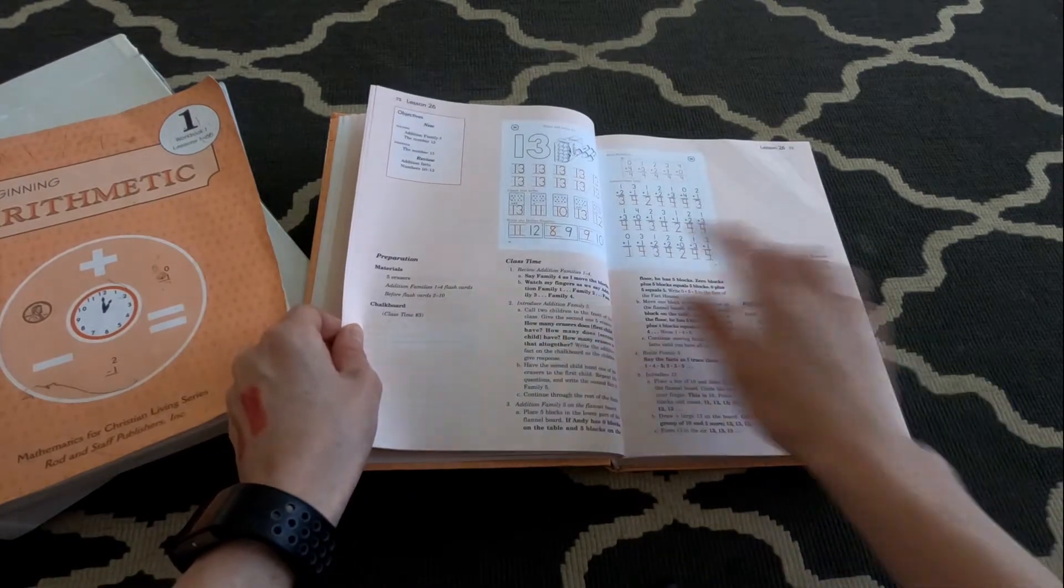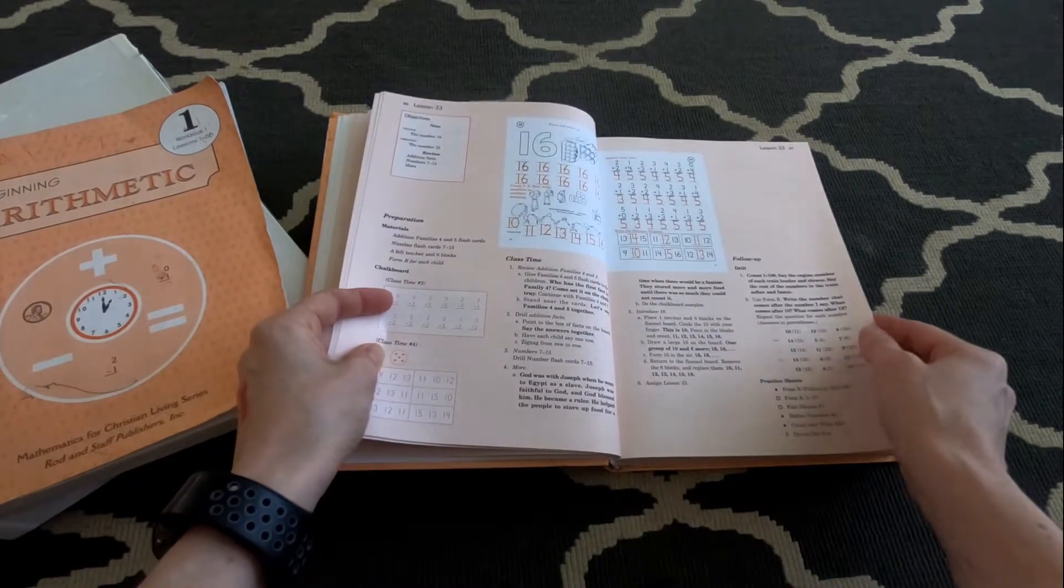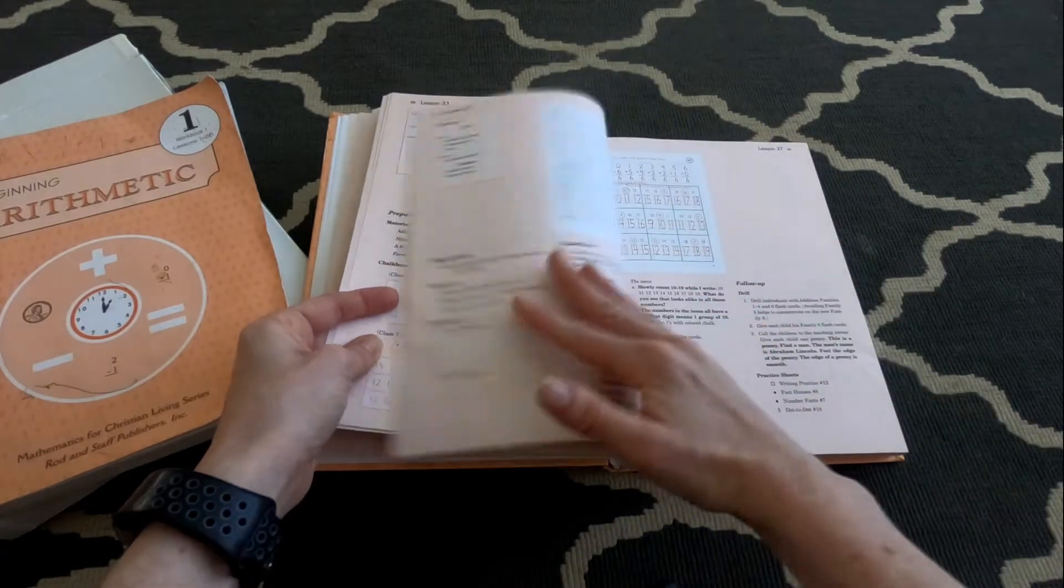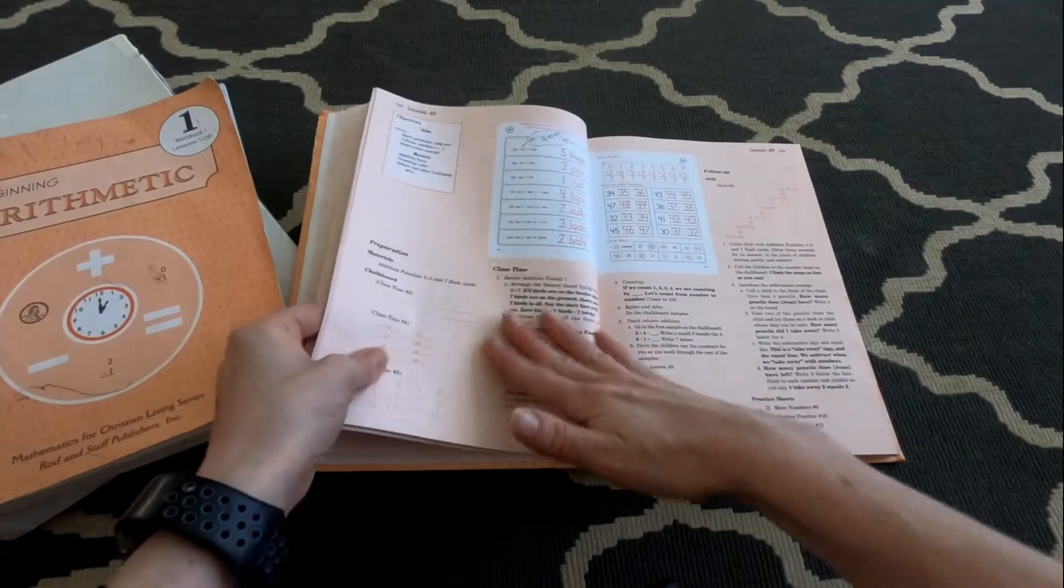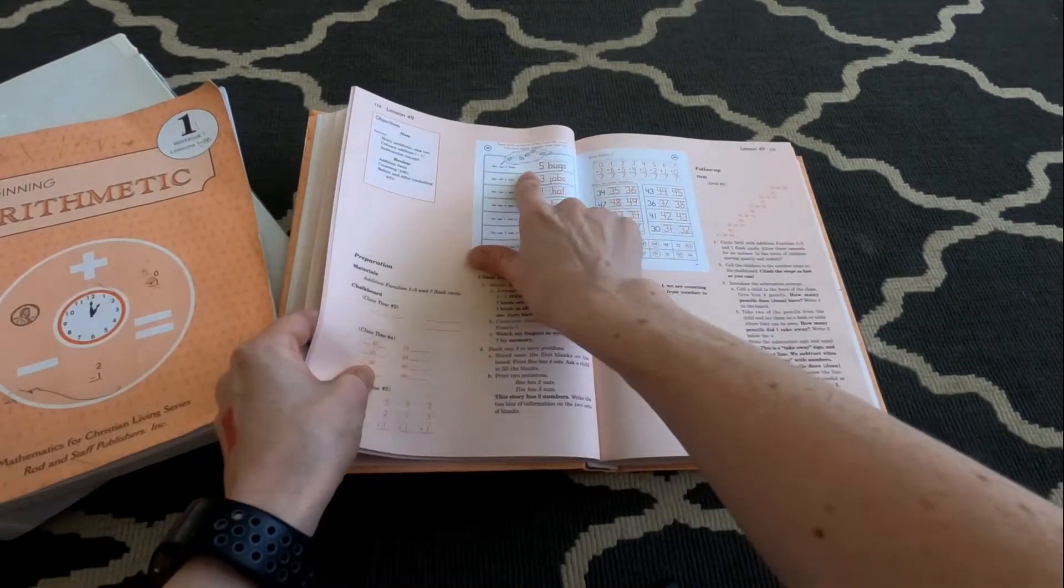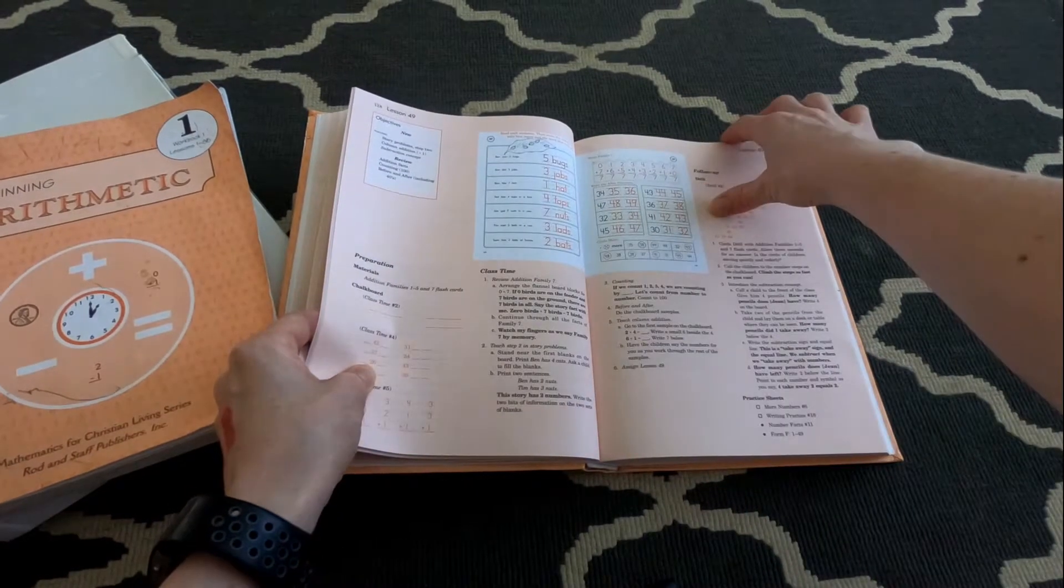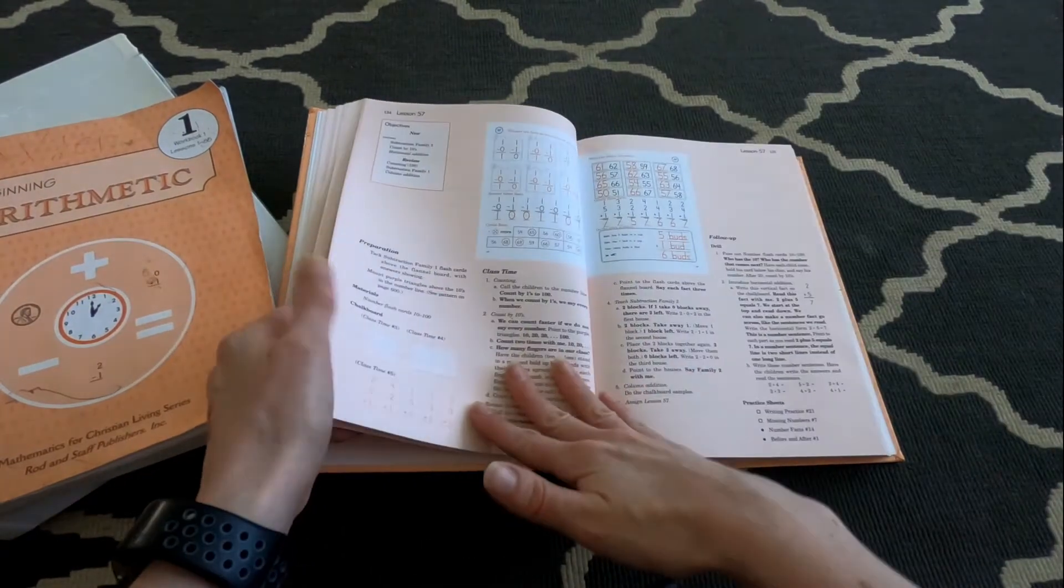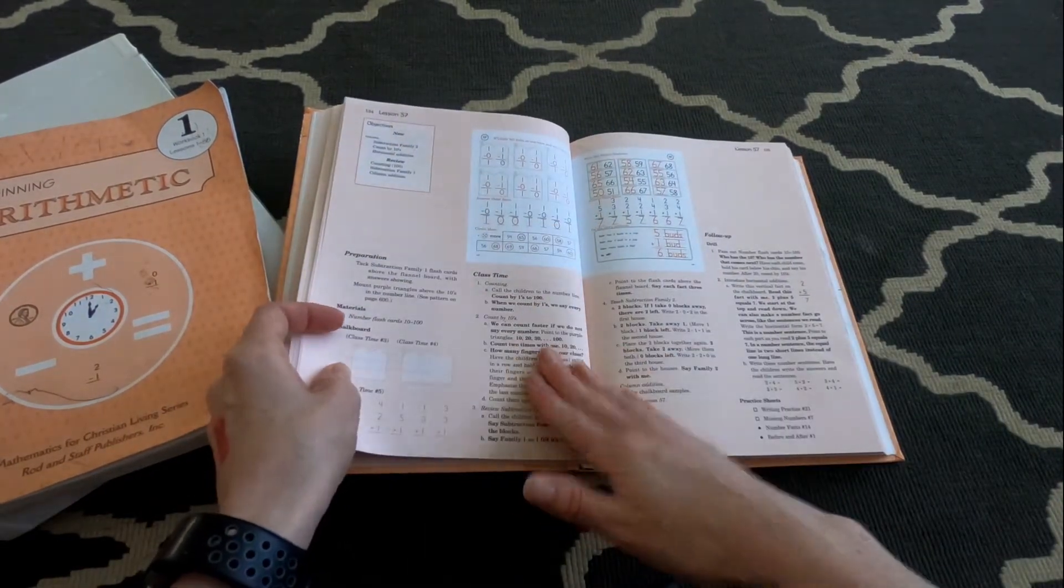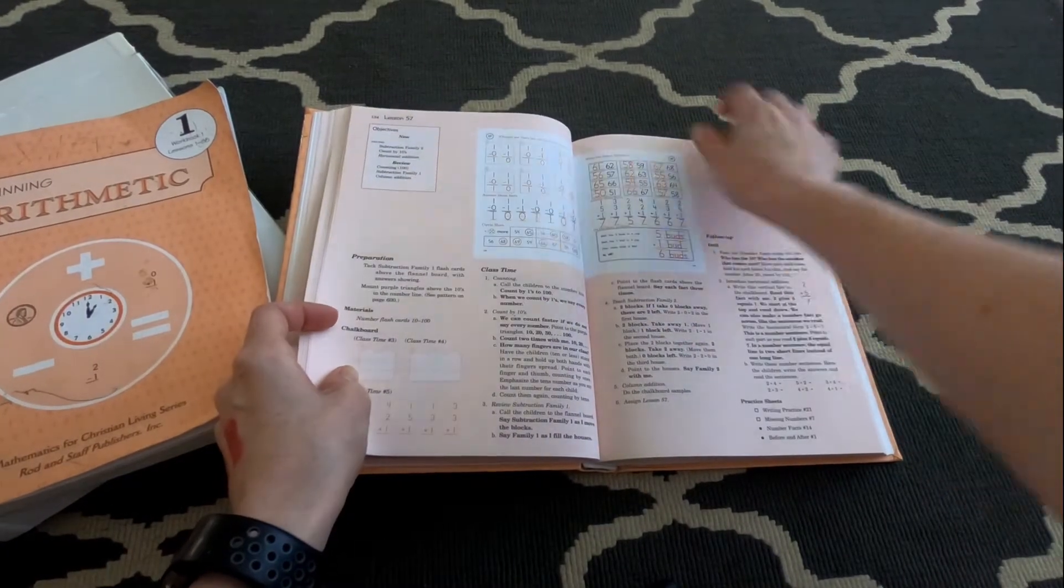So we go through bigger numbers. They introduce clocks and word problems, money. Let's keep going through and see some more. So here's the practicing number, I'm sorry, learning word problems, learning larger numbers.